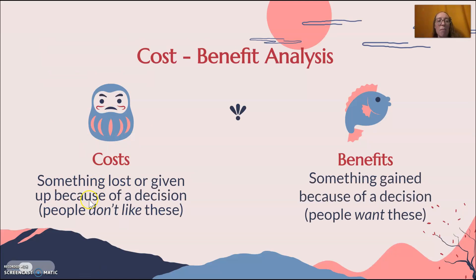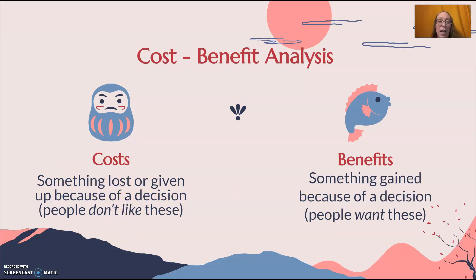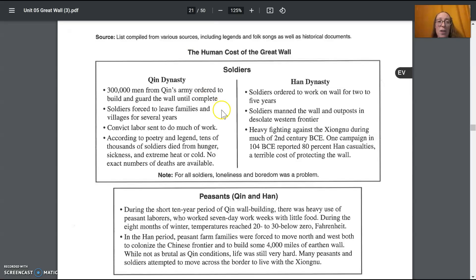At the bottom of the page, do your costs and benefits. This document doesn't have many benefits — if you look hard you might find something, but there are lots of costs here. That's why the document is titled 'The Human Cost of the Great Wall.' When you're finished, it's time to go on to the last document. You are so close to being done — great job.